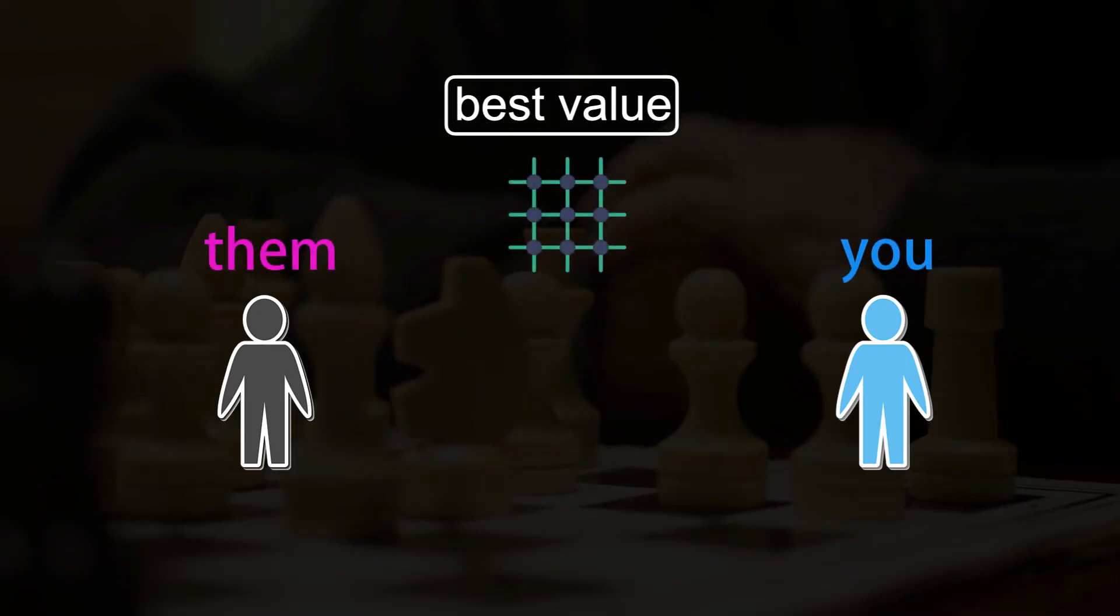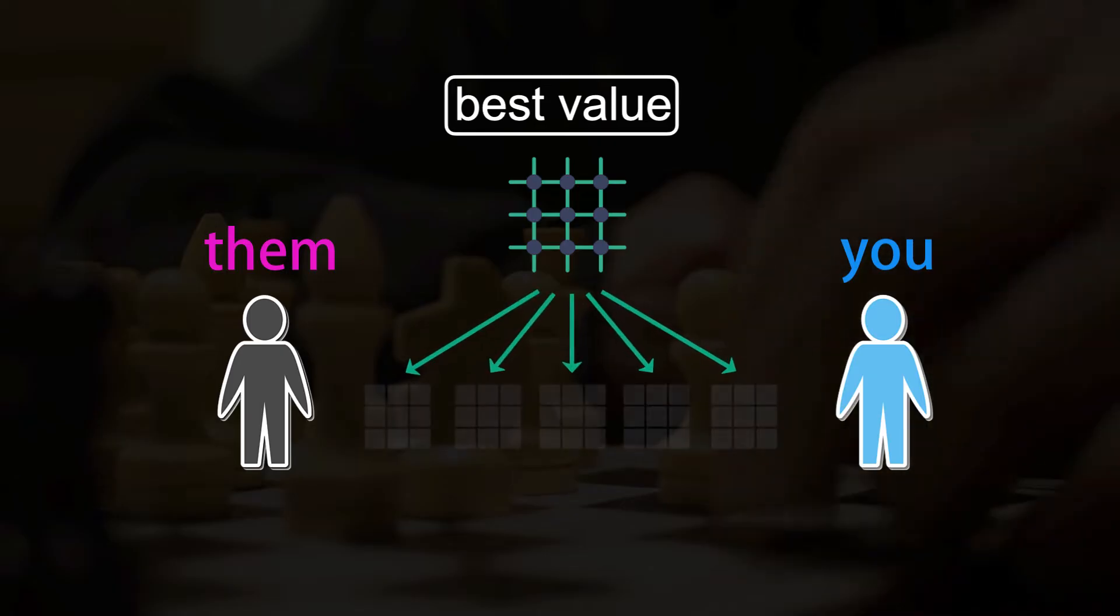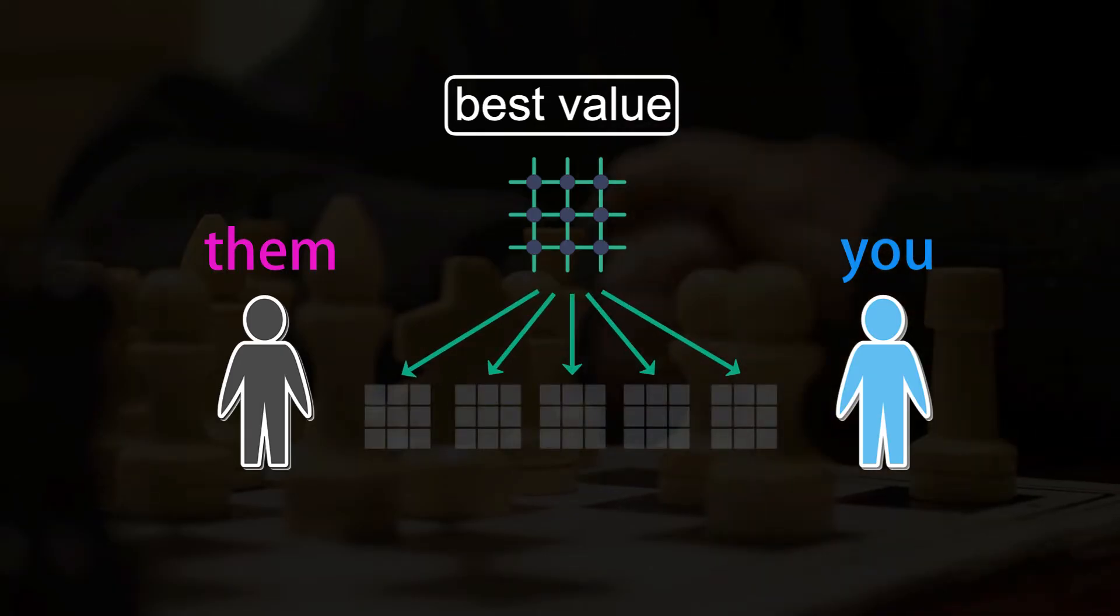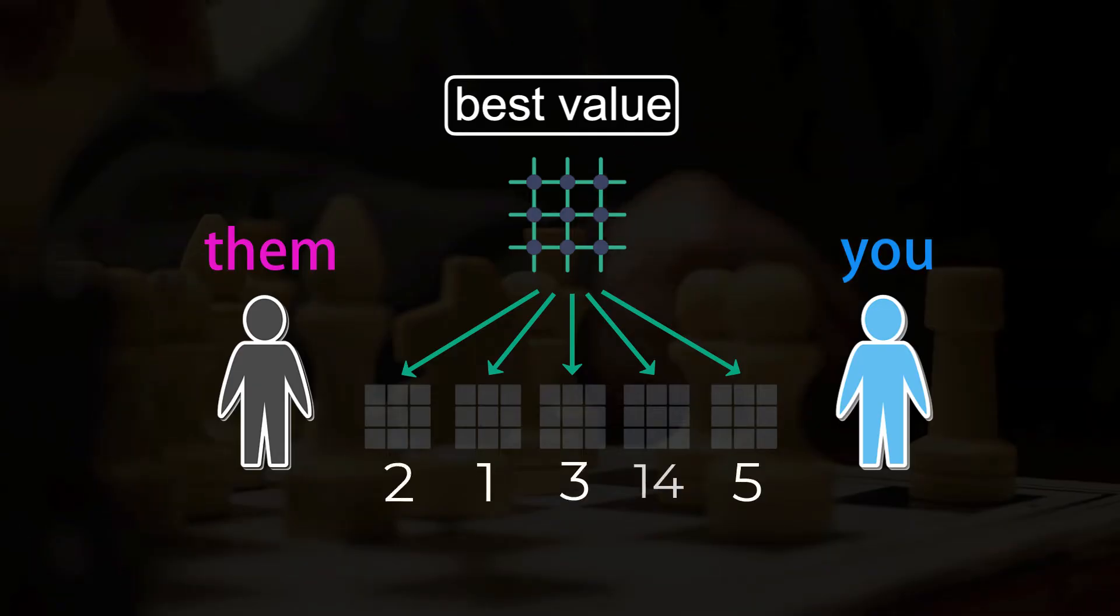Imagine this is a representation of a game you're playing and there can be a number of moves. Say you have a function that evaluates how good the next positions are.